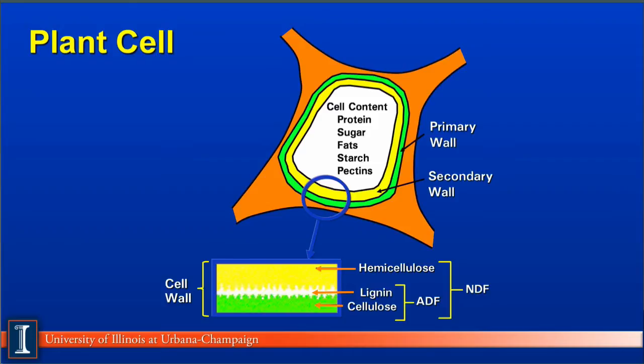You can see from this slide the relationship of ADF and NDF. Inside the cell wall is the cell contents, or all the goodies. This is what you and I would eat each day: protein, sugar, fat, starches, pectins, and some minerals.